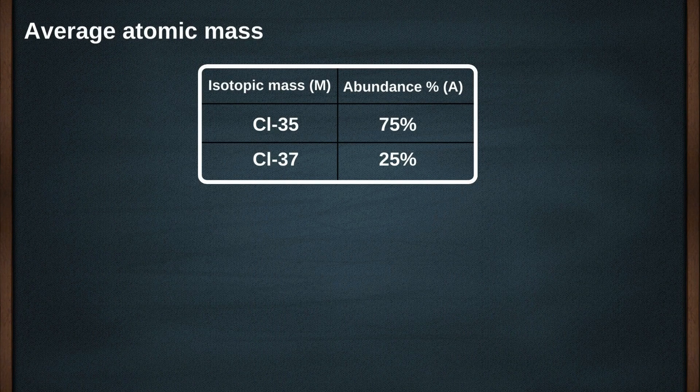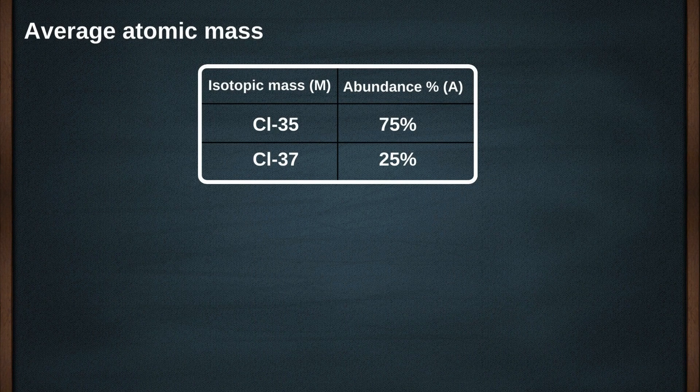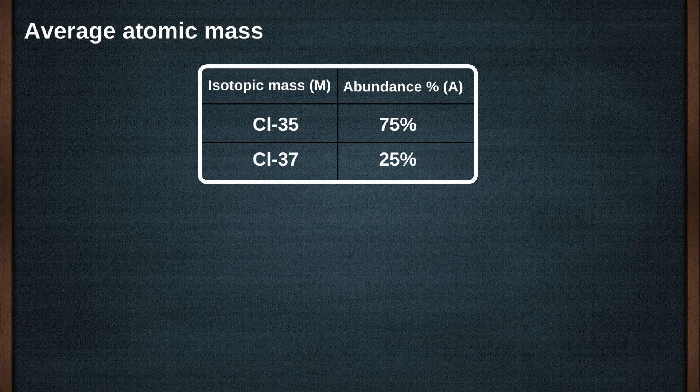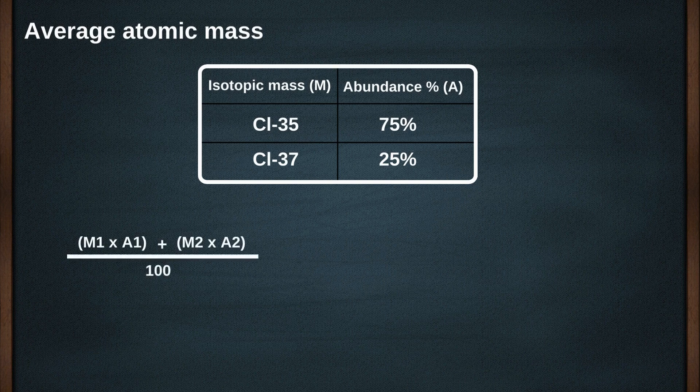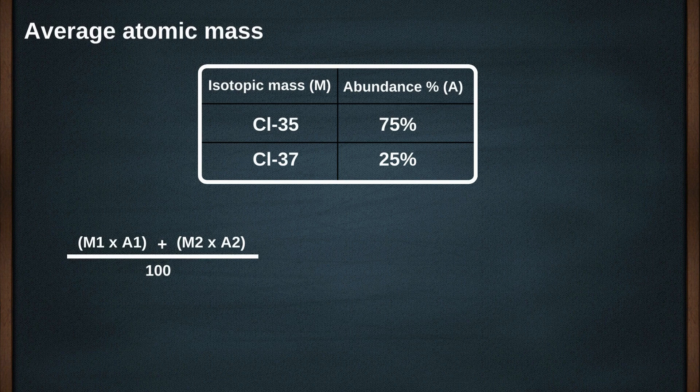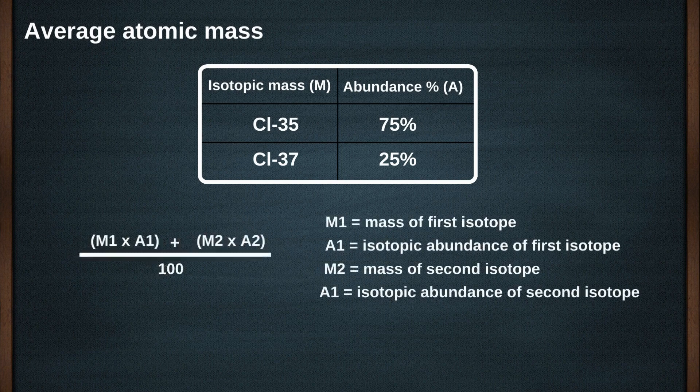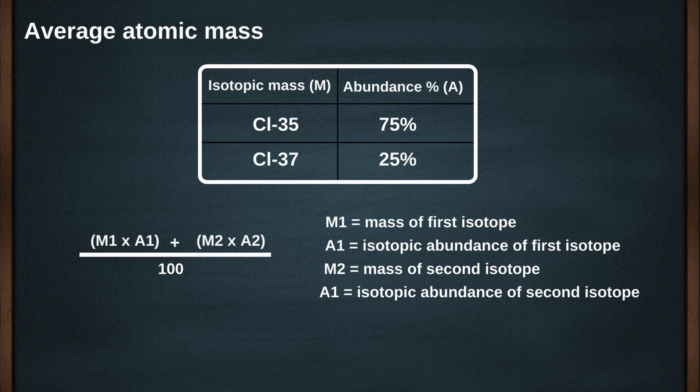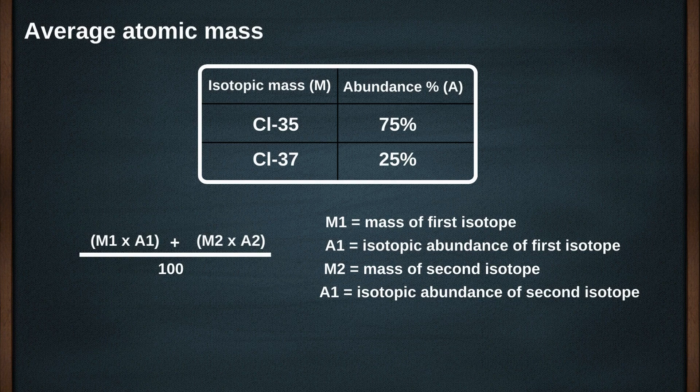When the abundance is expressed as percentages, the average atomic mass of the element can be calculated using the following formula: Product of M1 multiplied by A1, added to the product of M2 multiplied by A2, the sum is divided by 100. M1 is the mass of the first isotope and A1 is its isotopic abundance. M2 is the mass of the second isotope and A2 is its abundance.